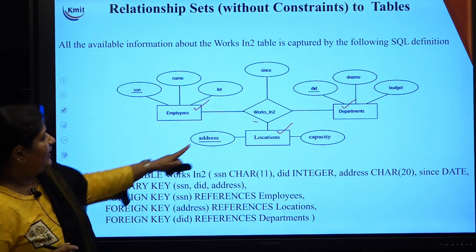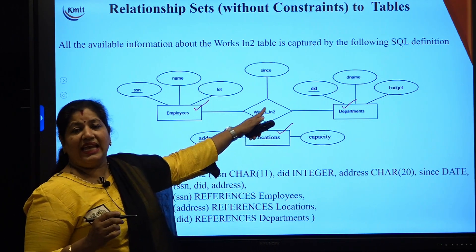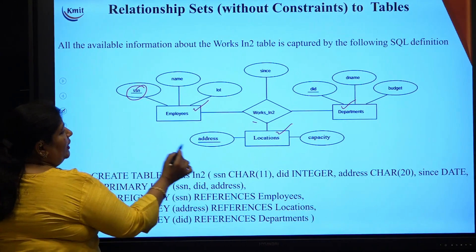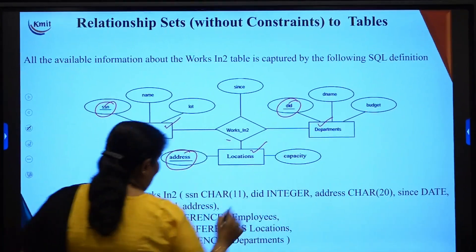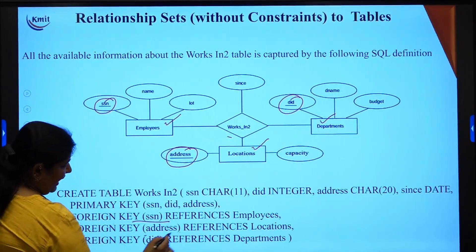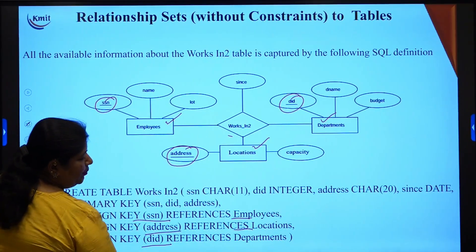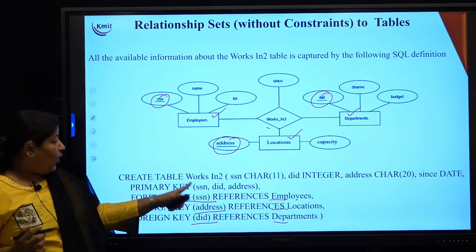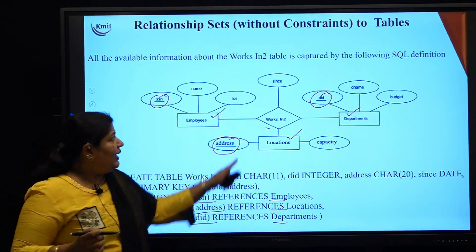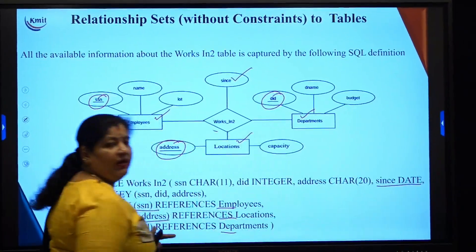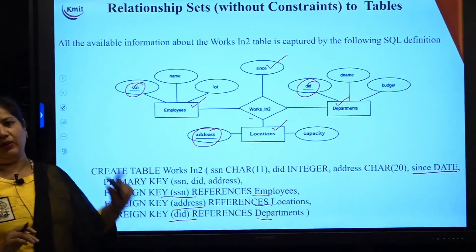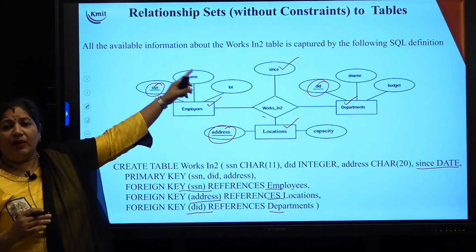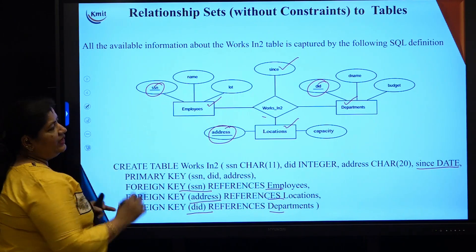In the table called 'Works_In', we include the primary keys of all participating entities — SSN, address, and DID from the Employee, Location, and Department tables respectively — as foreign keys, and together they form a composite primary key in the new table. The descriptive attribute is also an attribute of that table. This is the conversion when there is no specific constraint but the relationship needs to hold certain values.